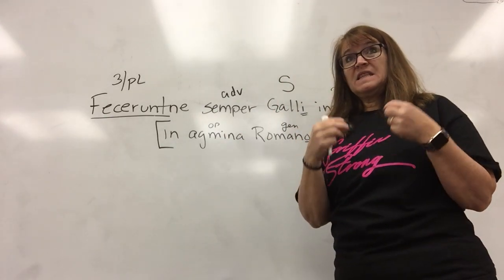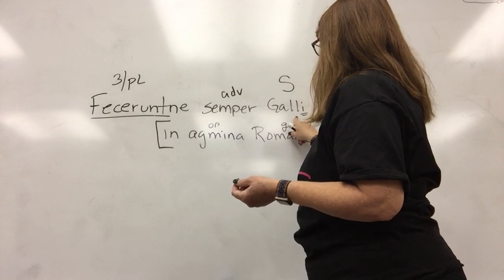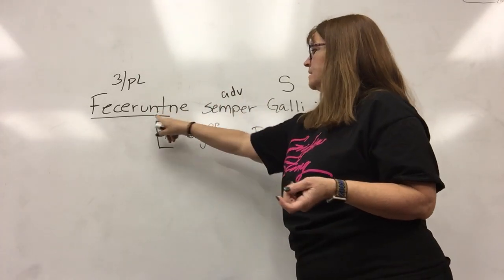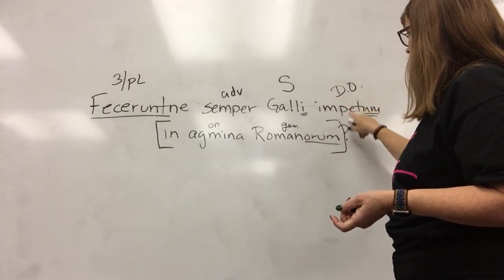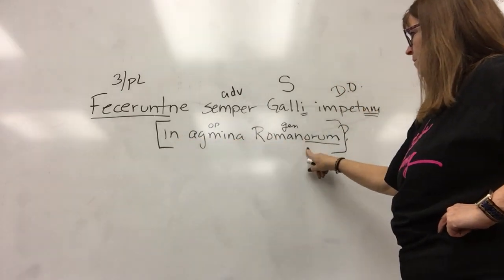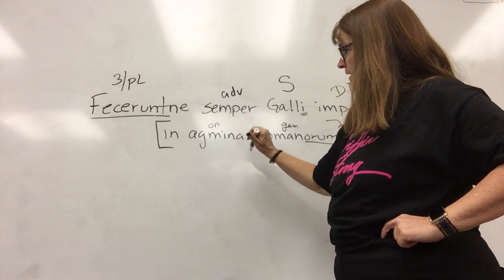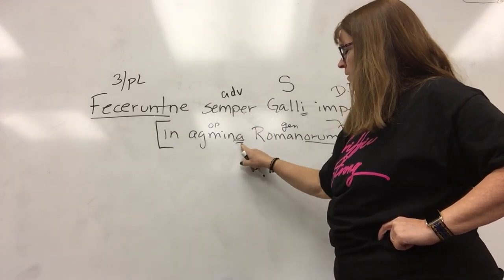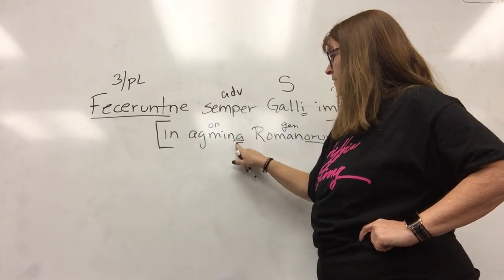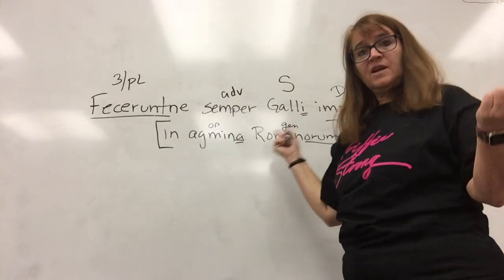So fecerunt — we know it was 'they made.' To make that a question, we don't say 'made they' — we'll have to add a 'did.' Did the Gauls always make — my direct object — an attack? Now I'm going to do my prepositional phrase: upon the column of the Romans. This in is taking the accusative case, so actually it should be columns because that is accusative plural. So: upon the columns of the Romans.